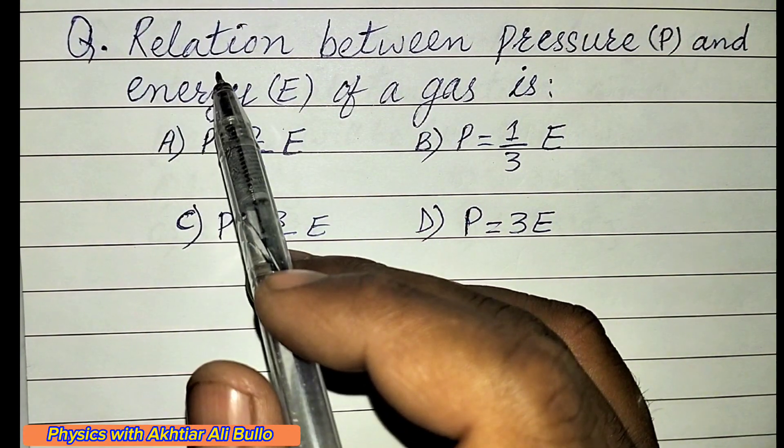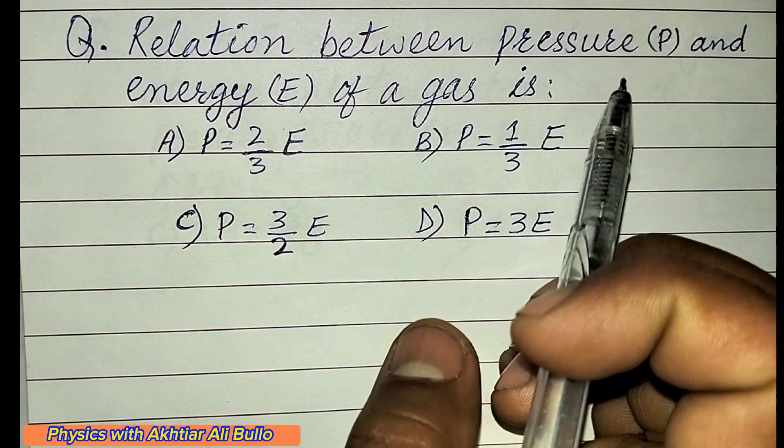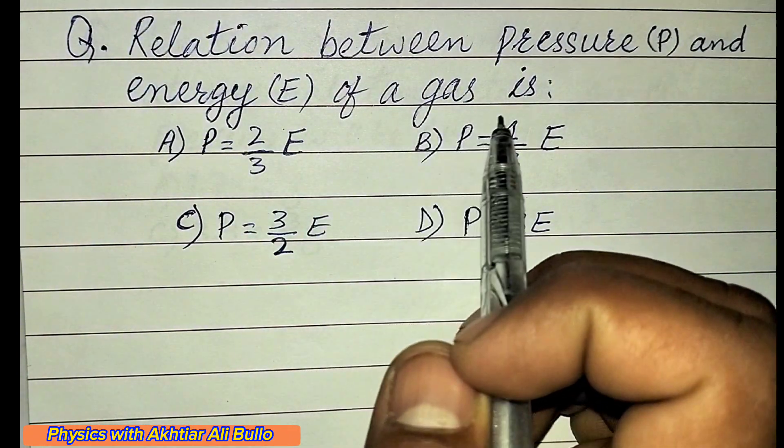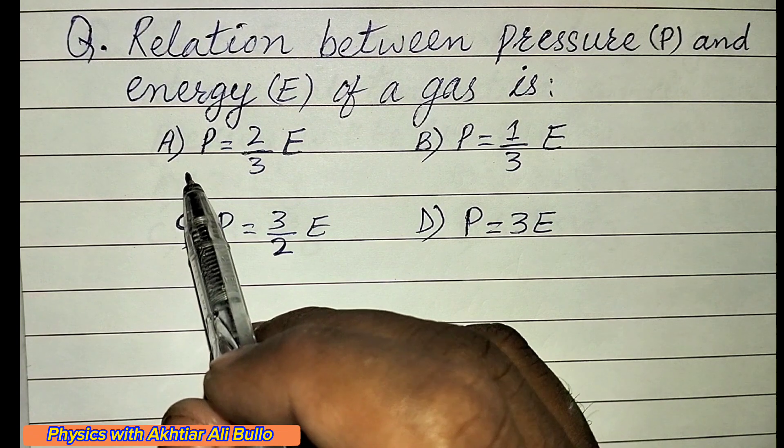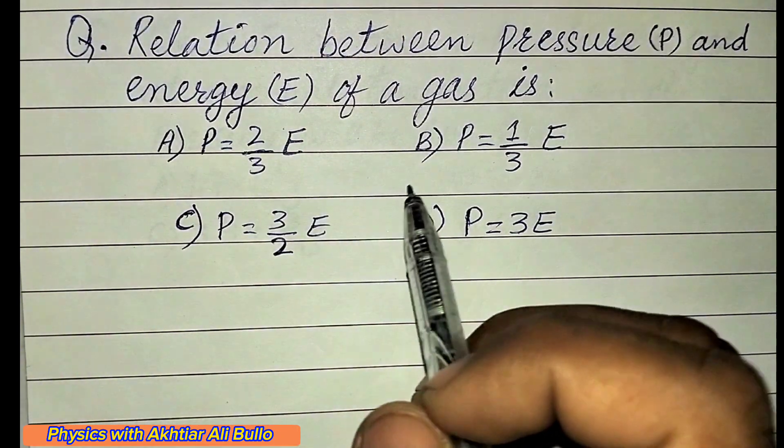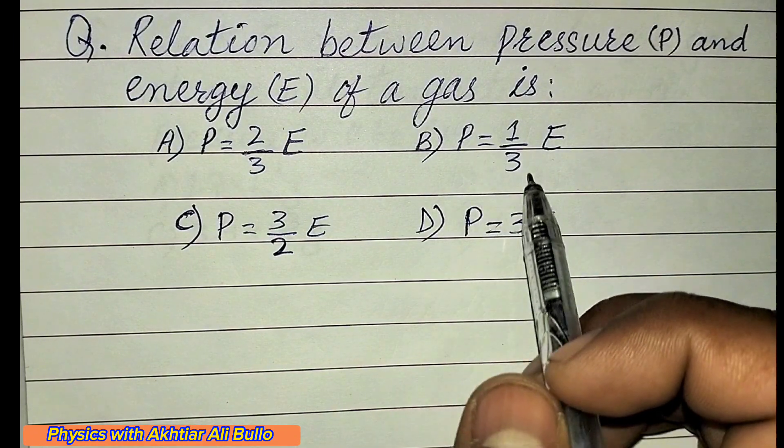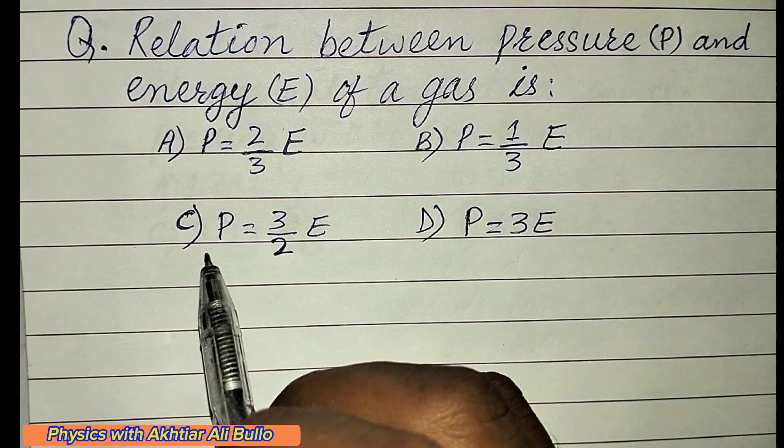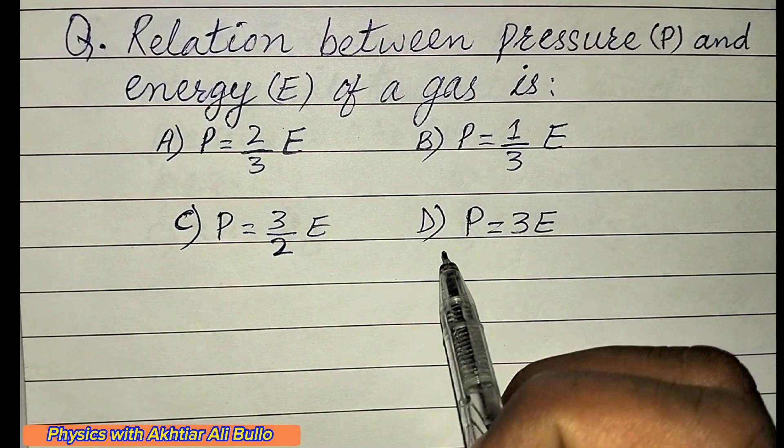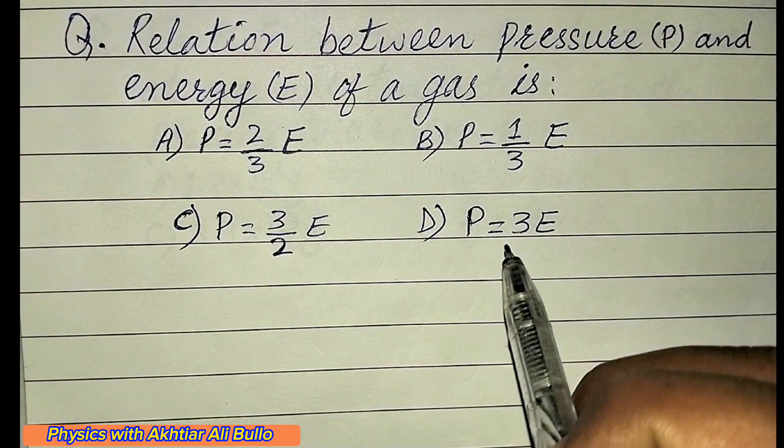The question is: what is the relation between pressure P and energy E of a gas? (a) P = 2/3 E, (b) P = 1/3 E, (c) P = 3/2 E, (d) P = 3E